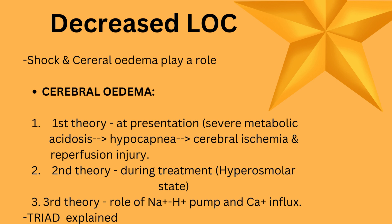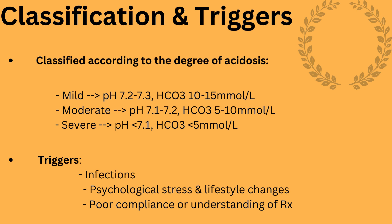DKA is classified according to the degree of acidosis. Our patient had a bicarb of 3.8, classifying her as severe DKA. Moderate DKA has a pH between 7.1 and 7.2 with a bicarb between 5 and 10. Mild DKA has a pH of 7.2 to 7.3 with a bicarb between 10 and 15.